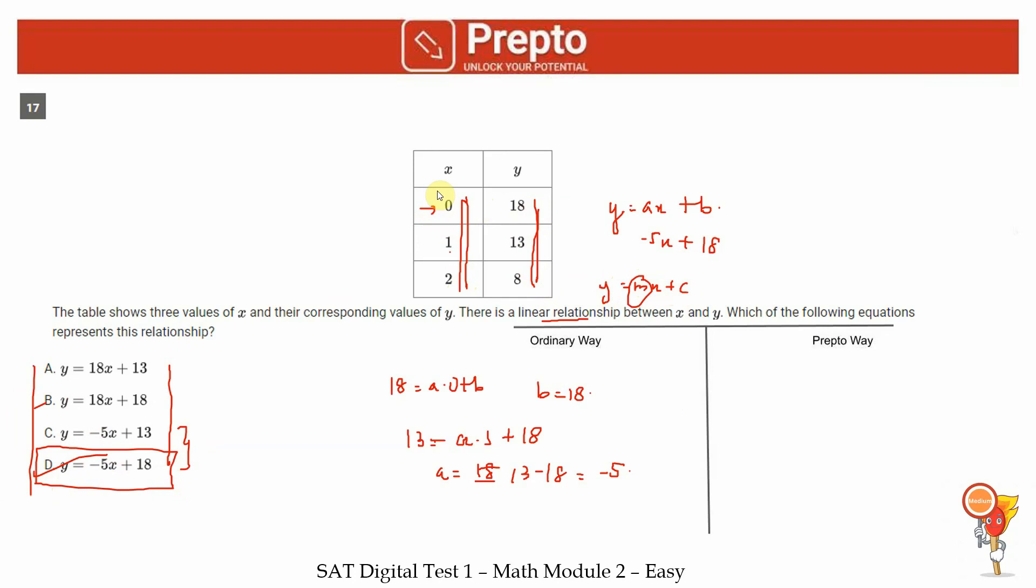In the Prepto way guys, the first thing you can notice is that as x increases, y is decreasing. So this is a negative slope function. When we look at y equals mx plus c, this is negative because as x increases, y decreases. So out of these four options, we are only looking at c or d. And when x is 0, y is equal to 18. So we are looking at option D. In fact, you can see that 18 is actually the y-intercept. I'm just connecting this algebra problem with coordinate geometry. 18 is the y-intercept, so your c has to be 18. In the Prepto way, without making any equation, writing anything down, you get that the answer is option D.